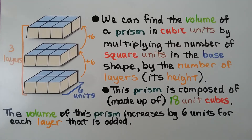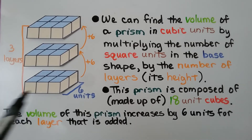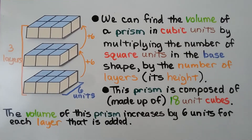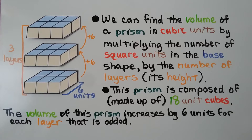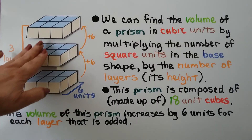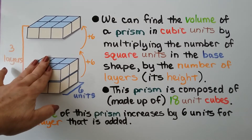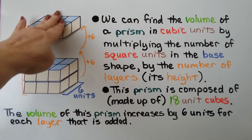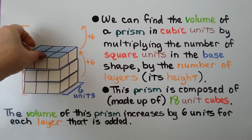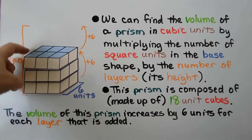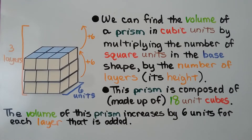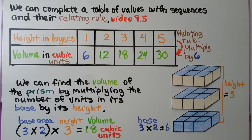We can find the volume of a prism in cubic units by multiplying the number of square units in the base shape by the number of layers, its height. This prism is composed of — that means made up of — 18 unit cubes. We have six, and six more, that's 12, and six more, that's 18. It's got three layers, and the volume increases by six units for each layer added. We can complete a table of values with sequences and their relating rule, as we did back in video 9.5, linked in the description.